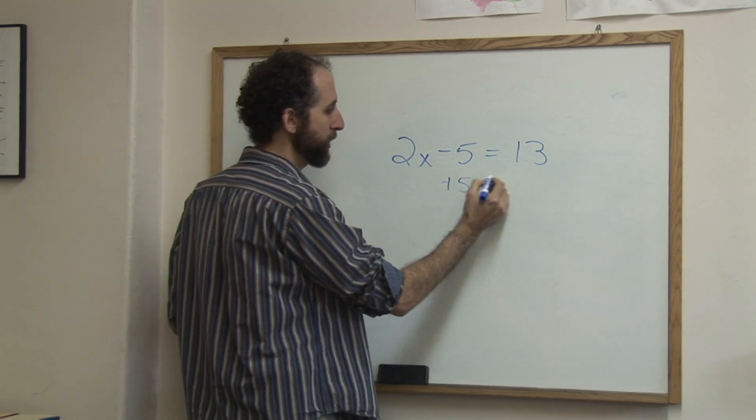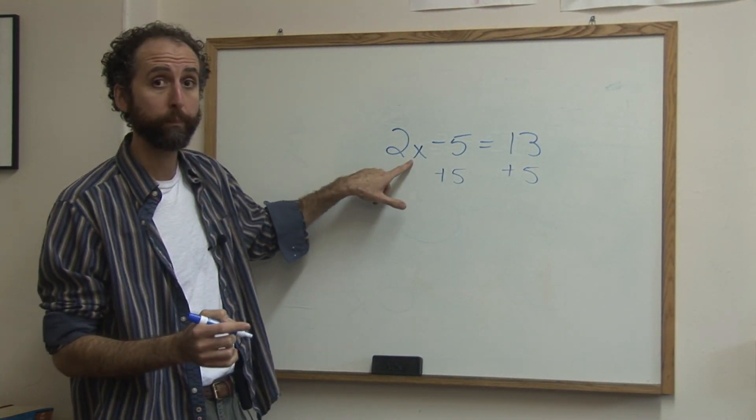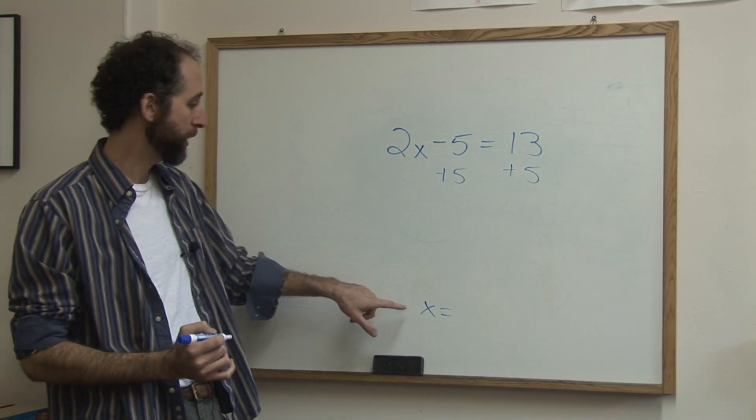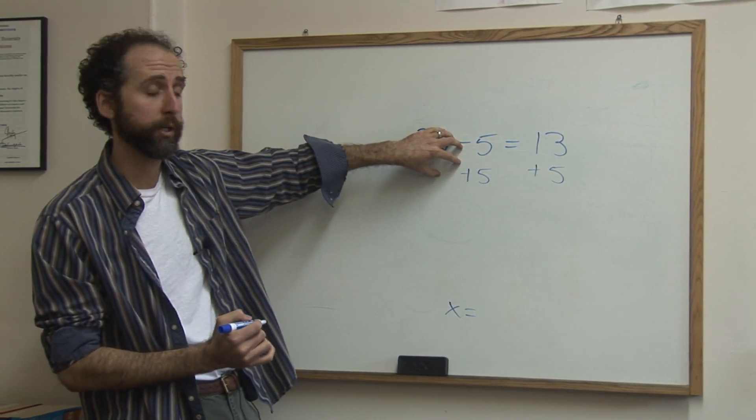So we're going to add 5 to both sides. Our goal, by the way, is to get x alone, because if we want to know what x equals, you're really saying get x alone, get it by itself, and then whatever x equals, we know what it is. So we want to clear away the stuff around the x.